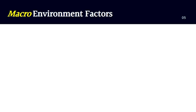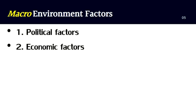We also have the macro environment factors. There are six macro environment factors. Number one, political factors — these are about how and to what degree a government intervenes in the economy. It includes government policy, political stability or instability in overseas markets, foreign trade policy, tax policy, labor law, environmental law, and trade restrictions. Number two, economic factors — these have a significant impact on how an organization does business and how profitable it is. These factors include economic growth, interest rates, exchange rates, inflation, and disposable income of consumers and businesses.